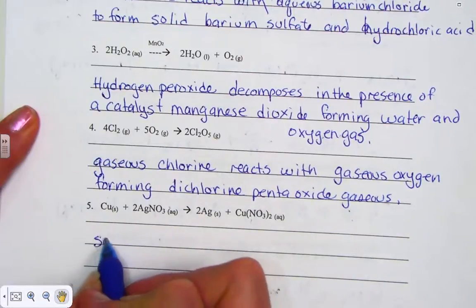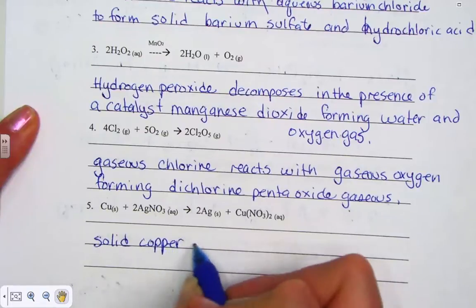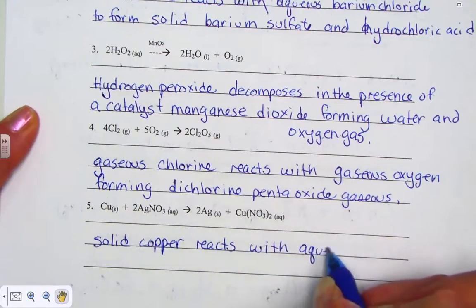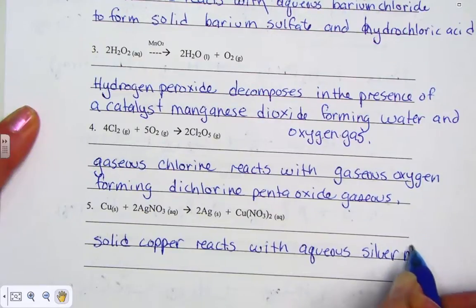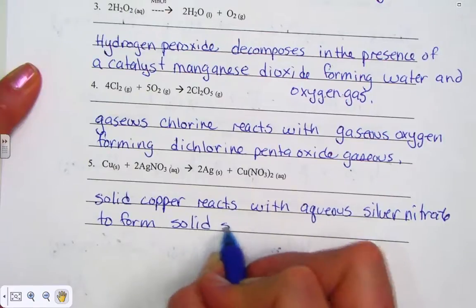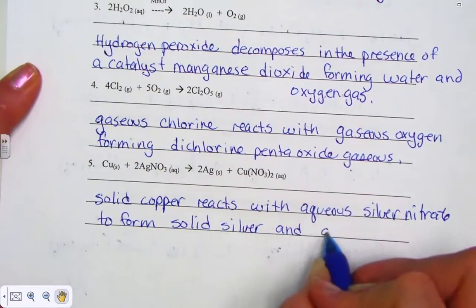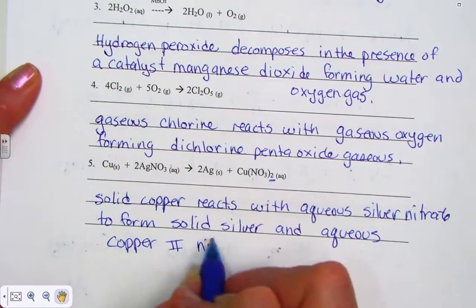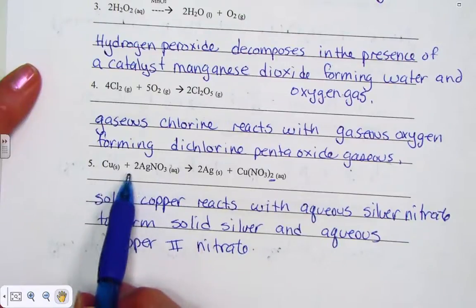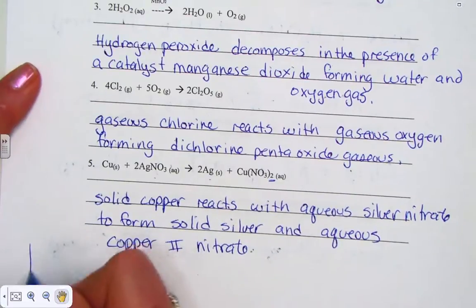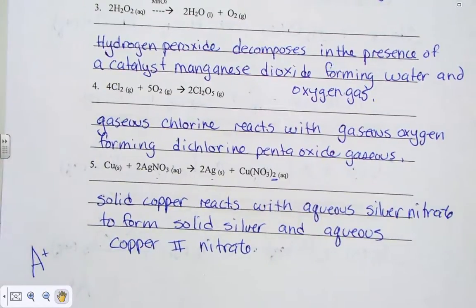And one more. We have solid copper. And here's my verb. Reacts with. Aqueous silver nitrate. And on our arrow, how about we say to form solid silver. And aqueous. Did you remember your Roman numeral? Copper. Two. Nitrate. Solid copper reacts with aqueous silver nitrate, forming solid silver and copper 2 nitrate, aqueous. There, my friends, is an A+. If indeed it is complete and perfect, please turn it into the tray up on our table. We'll be starting a note pack lesson as the next step of today.